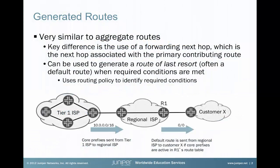A common question that we receive is: what is the difference between an aggregate route and a generated route? We'll start out with the aggregate route. The aggregate route itself, by default, has a next hop of reject. This means that we will not be forwarding traffic on the aggregate, but to a contributing route. The generated route actually can be used to forward traffic, because it will have a forwarding next hop which is associated with a primary contributing route.